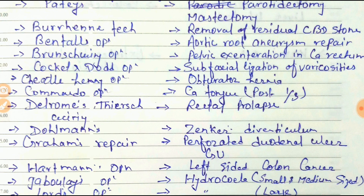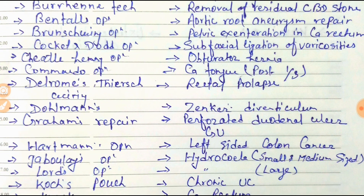For carcinoma of the tongue in the posterior one-third, it is Commando's operation. For rectal prolapse, two types of operation are used: Delorme's and Thiersch wiring. For Zenker's diverticulum — which is a posterior lateral diverticulum of the pharynx — it is Dohlman's operation.